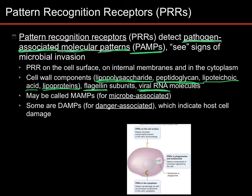Bacterial flagella are very different and very recognizable. For viral RNA, probably the most common thing you're looking for is double-stranded RNA. All of your RNA should be single-stranded, but viruses often have double-stranded RNA. So if you see double-stranded RNA, that's a good sign it's associated with a virus. PAMPs are sometimes called MAMPs — microbe-associated molecular patterns — because they might be on a microbe that's not a pathogen. But honestly, if you find a microbe inside your body, you should kill it.